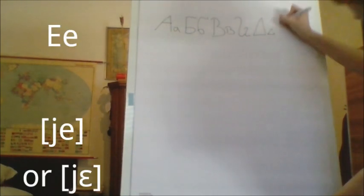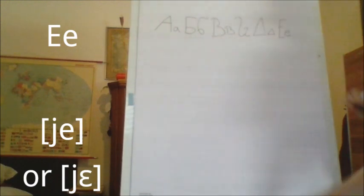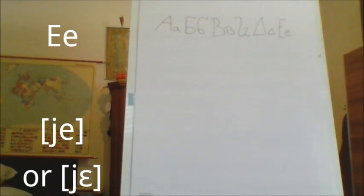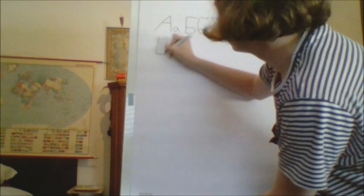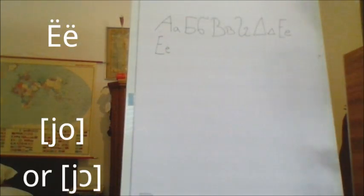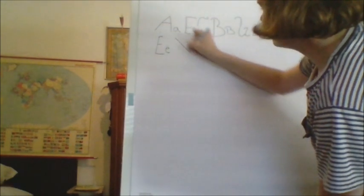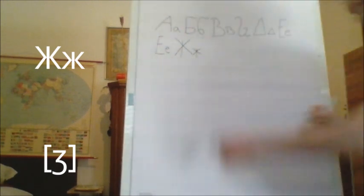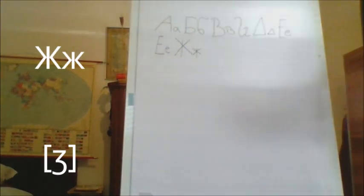Next up is the letter Е. It just looks like an E and it makes the 'ye' sound — not 'e', that's a different letter. This one always makes the 'ye' sound with the J in front of it. Similarly we have the next letter, which is going to be Ё — it's the same letter just with two dots on top, and it makes the 'yo' sound. Then we have the letter Ж. It's just these three lines, like an X with an extra line. It makes the 'zh' sound.